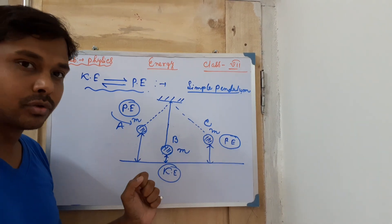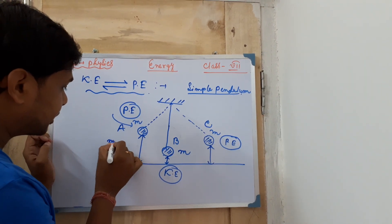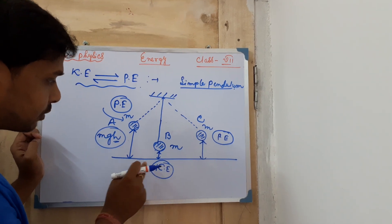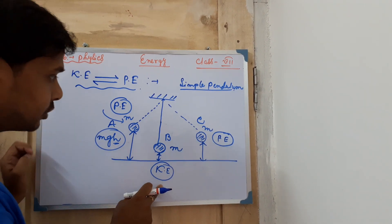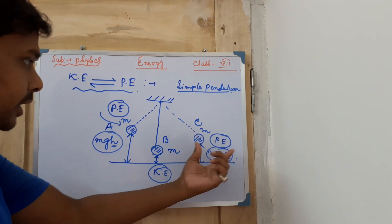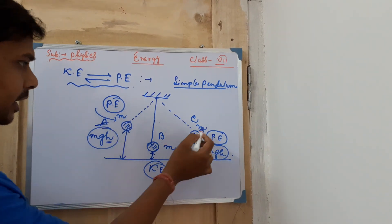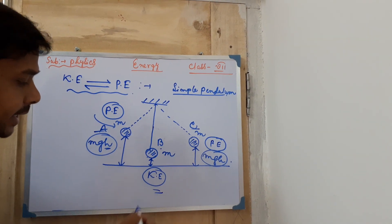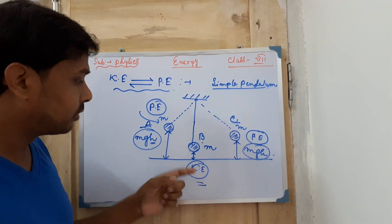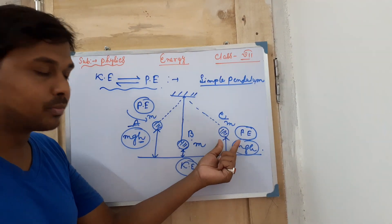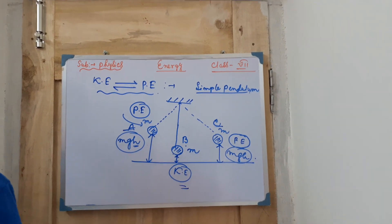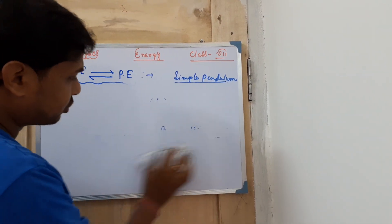When the height is more, mgh is more, so potential energy is greater. When height is less, potential energy is less and kinetic energy is more. At positions A and C, potential energy is maximum; at position B, kinetic energy is maximum. So the pendulum demonstrates the continuous conversion of potential energy to kinetic energy and back — this is the example of kinetic-to-potential energy interconversion.